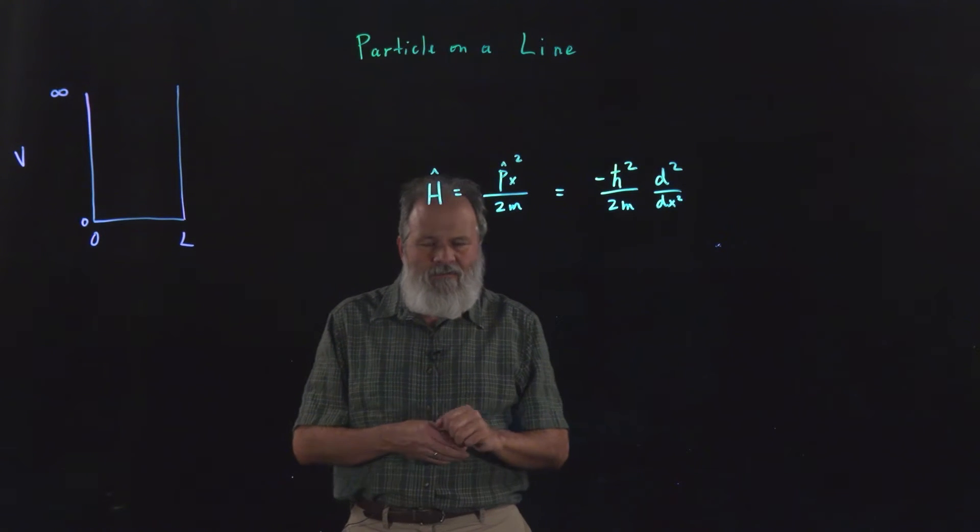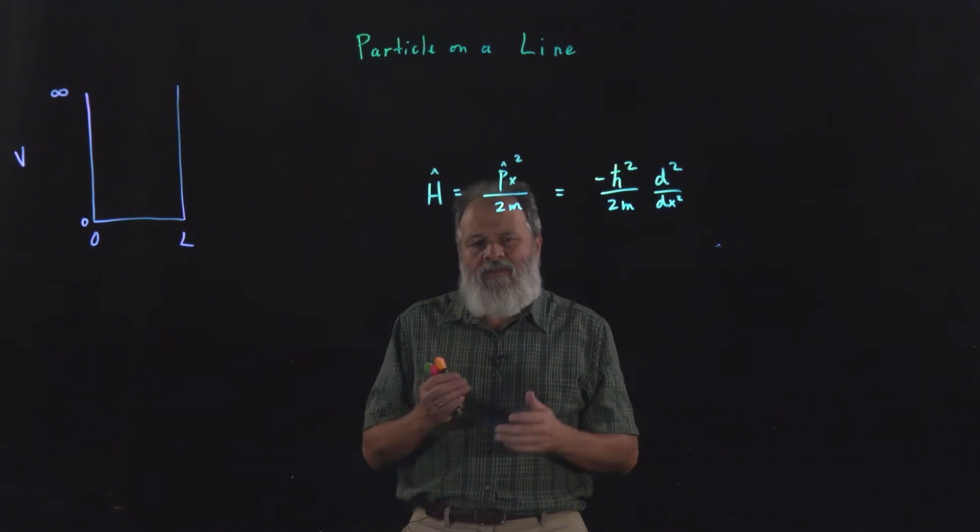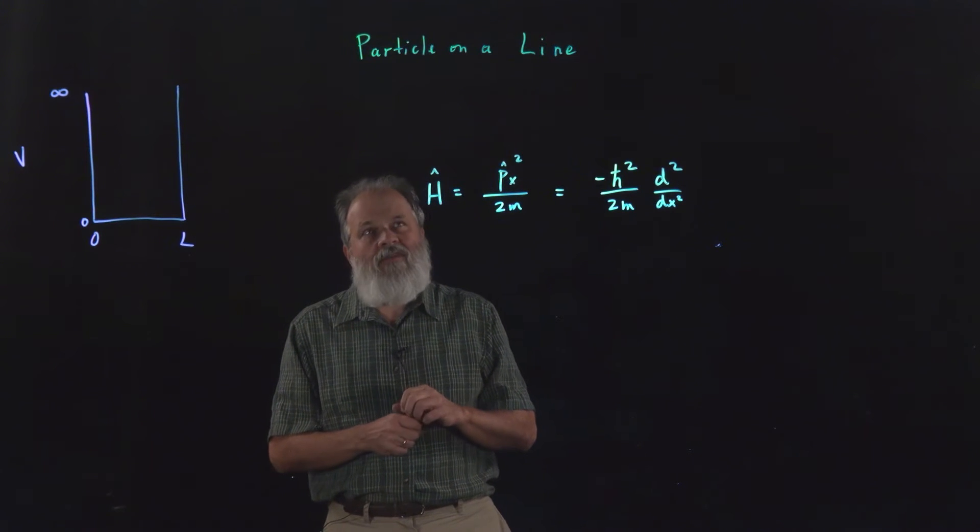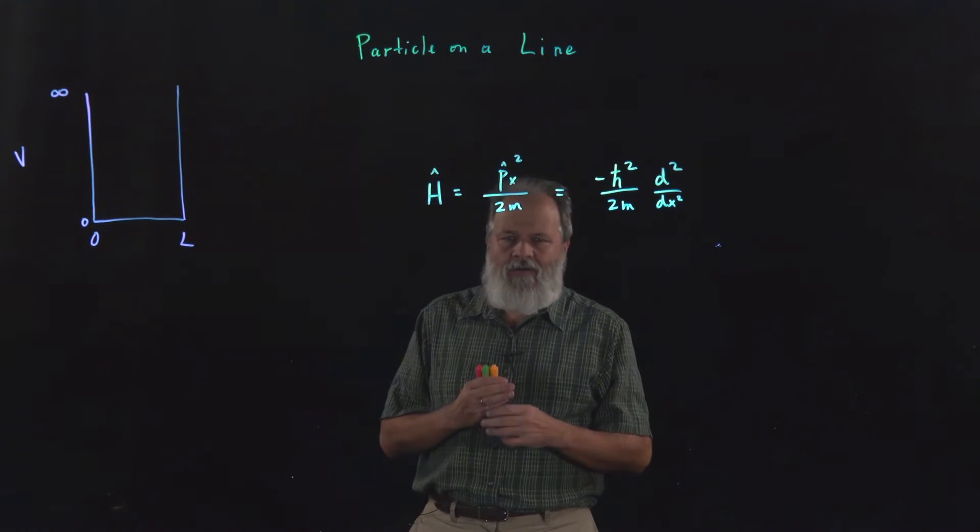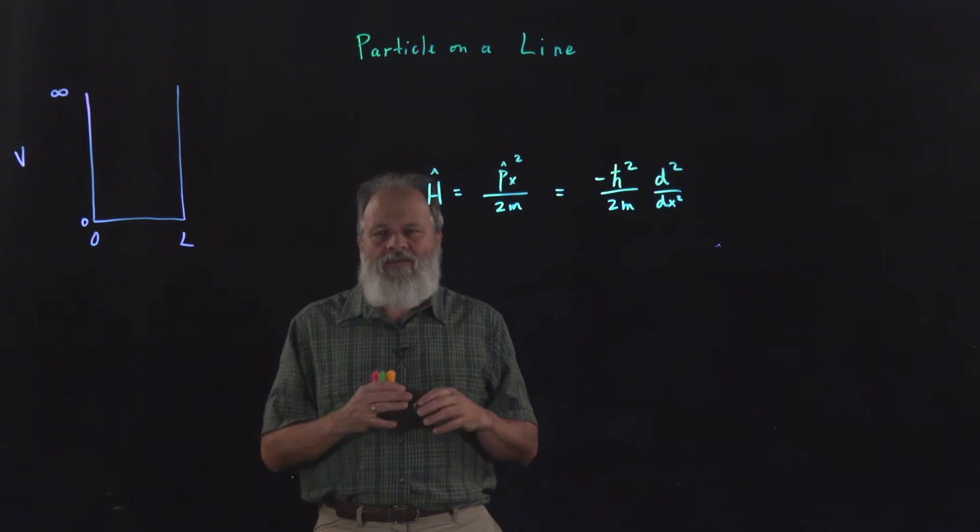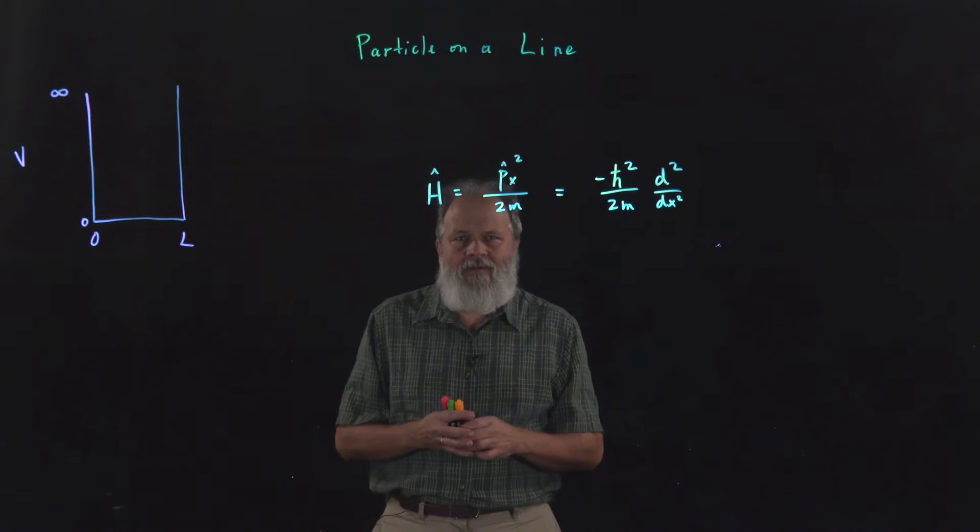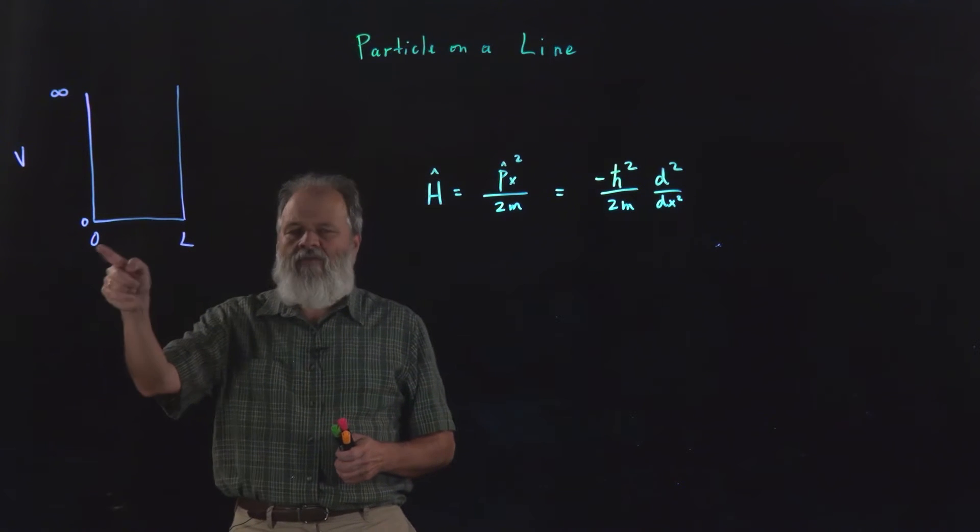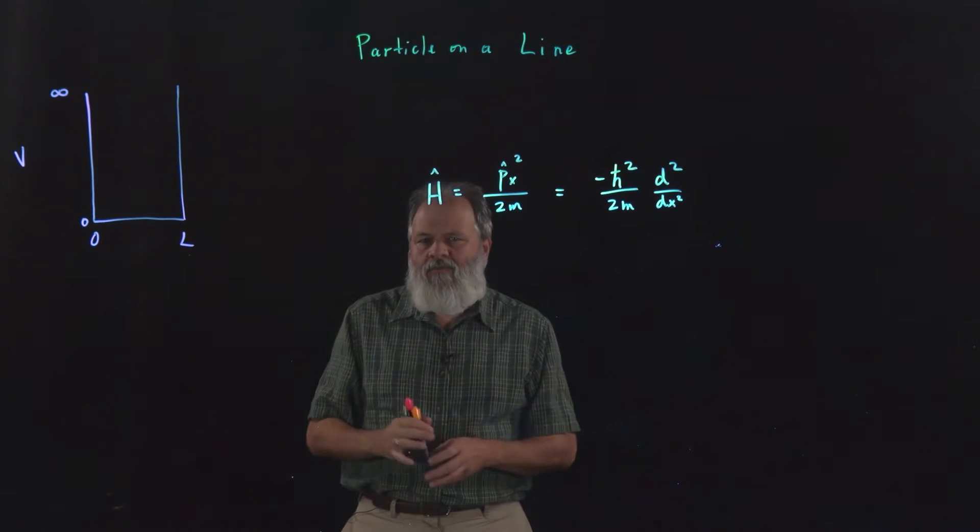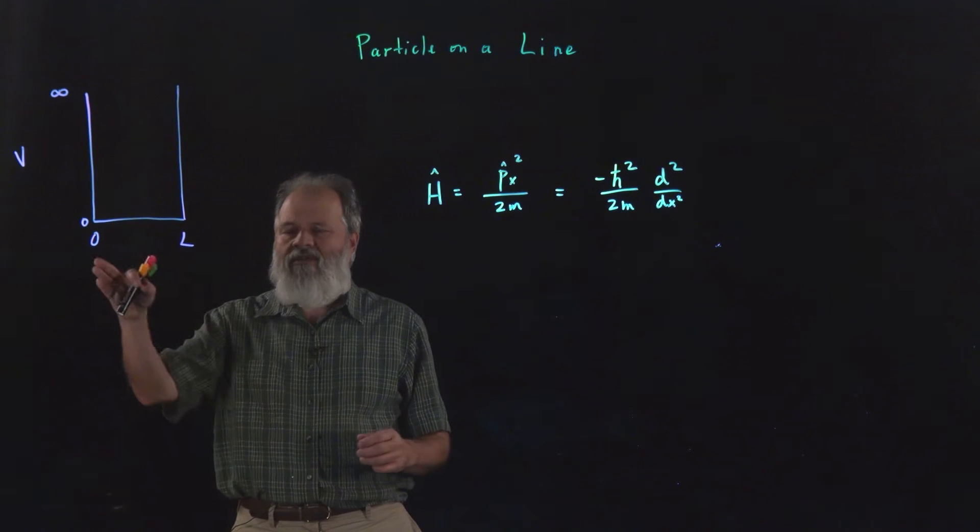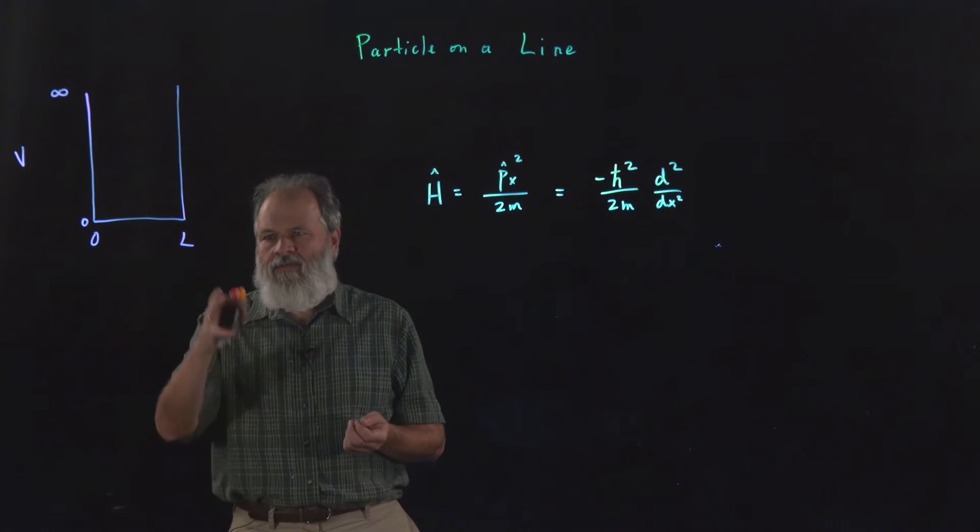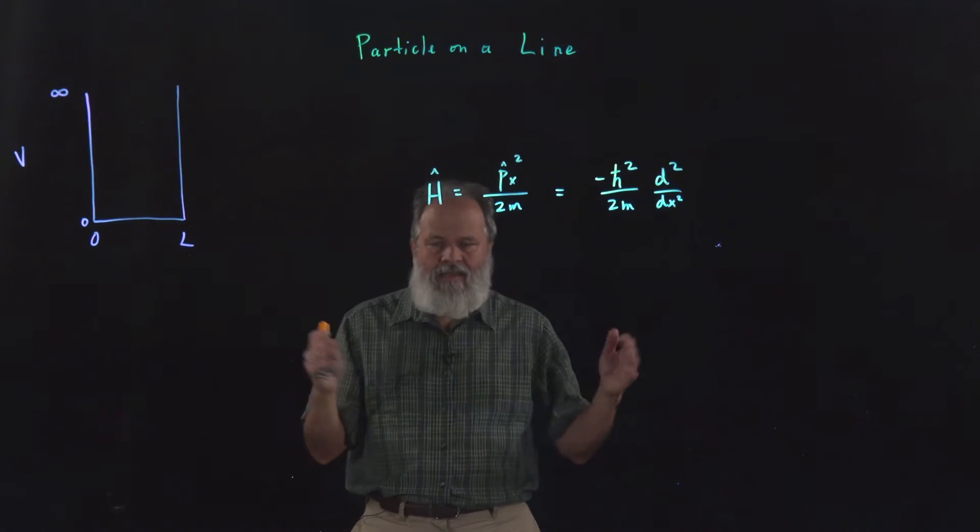In this video, I want to illustrate some quantum mechanical ideas and principles with a problem called particle on a line. It's very similar to the free particle in that the potential energy is zero, but instead of being zero for all of space, it's going to be zero only for an interval from zero to the length of the box or the line, L.